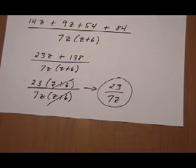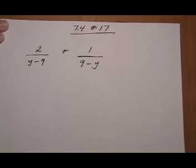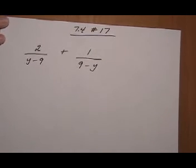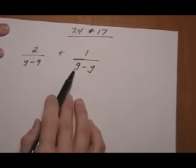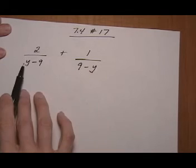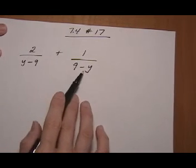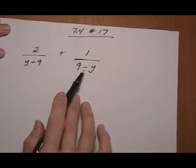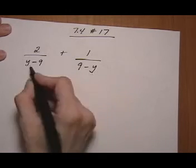And let's try one more, number 17. Alright, number 17 has different denominators, but they're very similar. They're only different because their signs are different. So here we have Y minus 9, and here we have 9 minus Y.